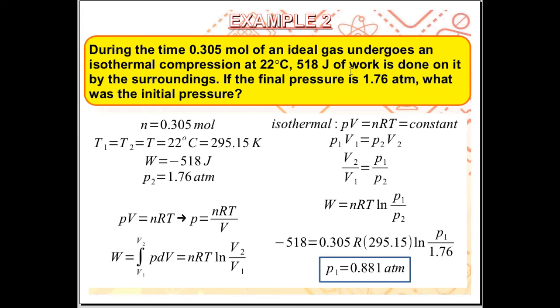The work done is 518 joules. This is work done on the system by the surrounding. Applying our sign convention for work done on the system is negative. Work is equal to minus 518 joules. And the final pressure, P2 is equal to 1.76 atm. Applying what we learned in example 1.